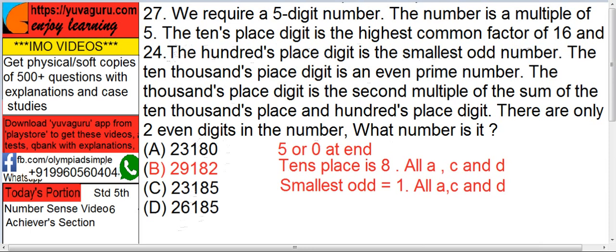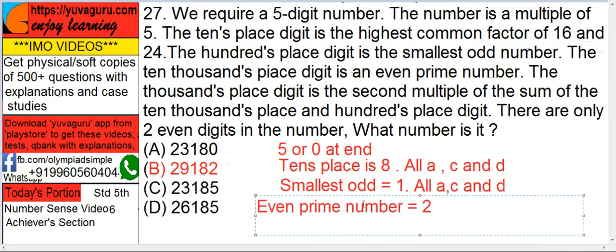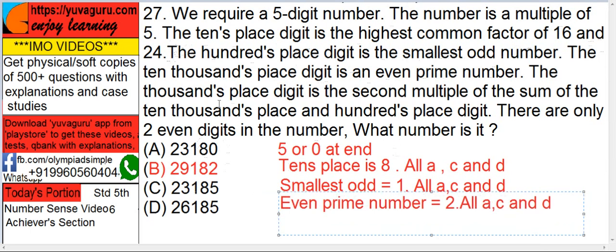Next condition: The ten thousand's place digit is an even prime number. What is a prime number? Prime number means that number which is divisible by that number only or by 1. So any even number other than 2, take 4, 6, 8, 10, 12, any other number will be definitely divisible by 2. Only 2 is divisible by itself or by 1. So even prime number in the whole world is only 1, that is 2. Check this condition: 2, 2, 2. Again it is common to all A, C and D. It is getting very tough now.